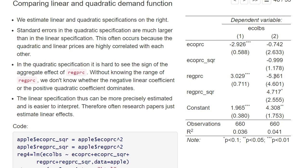For the regular price we find a different sign for the linear term and the quadratic term, and if you have these two different signs it's really hard to see from the regression output whether on average a higher regular price increases or reduces the demand for ecological apples. In the linear specification we very clearly have a positive sign, so we know a higher price of regular apples increases the demand for ecological apples — which makes sense from an economic point of view — but it's hard to see with the quadratic specification.